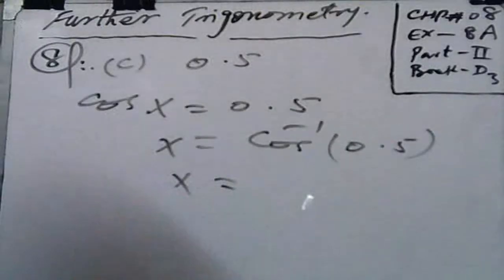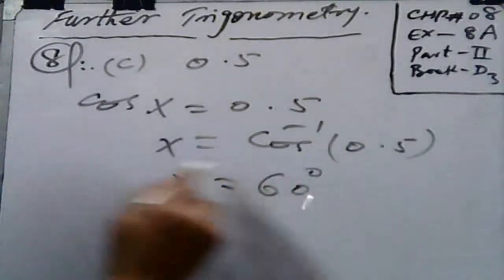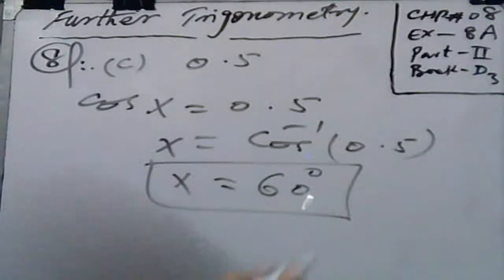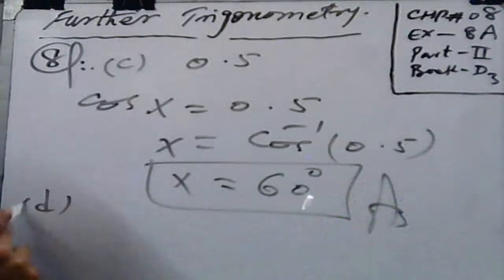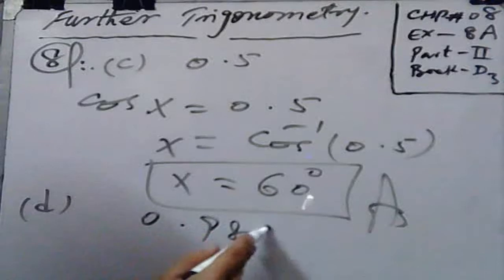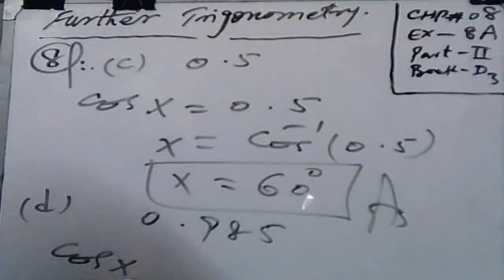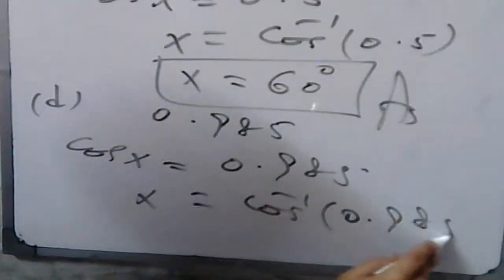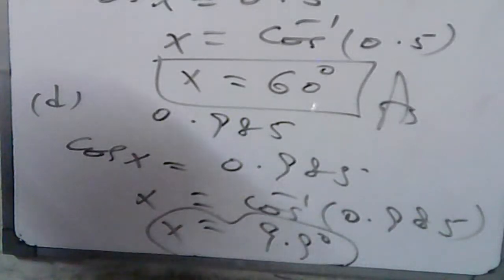For part c, cos x = 0.5. The value of x is equal to 60 degrees, which is also an acute angle. And for part d, the value of x is equal to 9 degrees, up to 1 decimal place, which is an acute angle. No need to convert to obtuse angle.